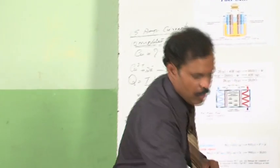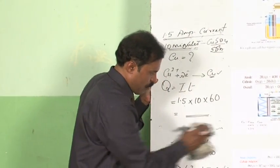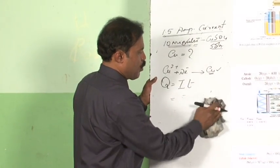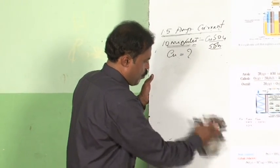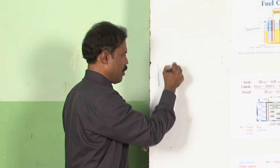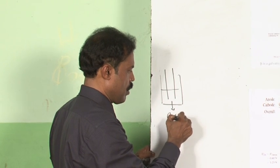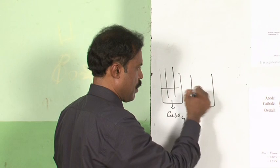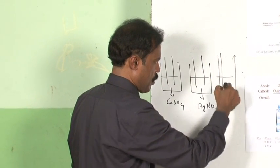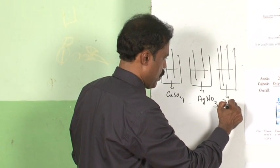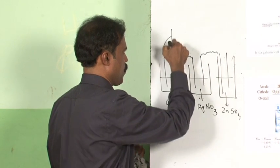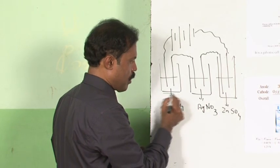Let us discuss Faraday's second law. In this law, electricity is passed through many cells connected in series, so the amount of electricity passed through all the cells remains the same. For example, one cell with copper sulphate electrolyte and copper electrodes, another with silver nitrate electrolyte and silver electrodes, and yet another with zinc sulfate — all connected in series.